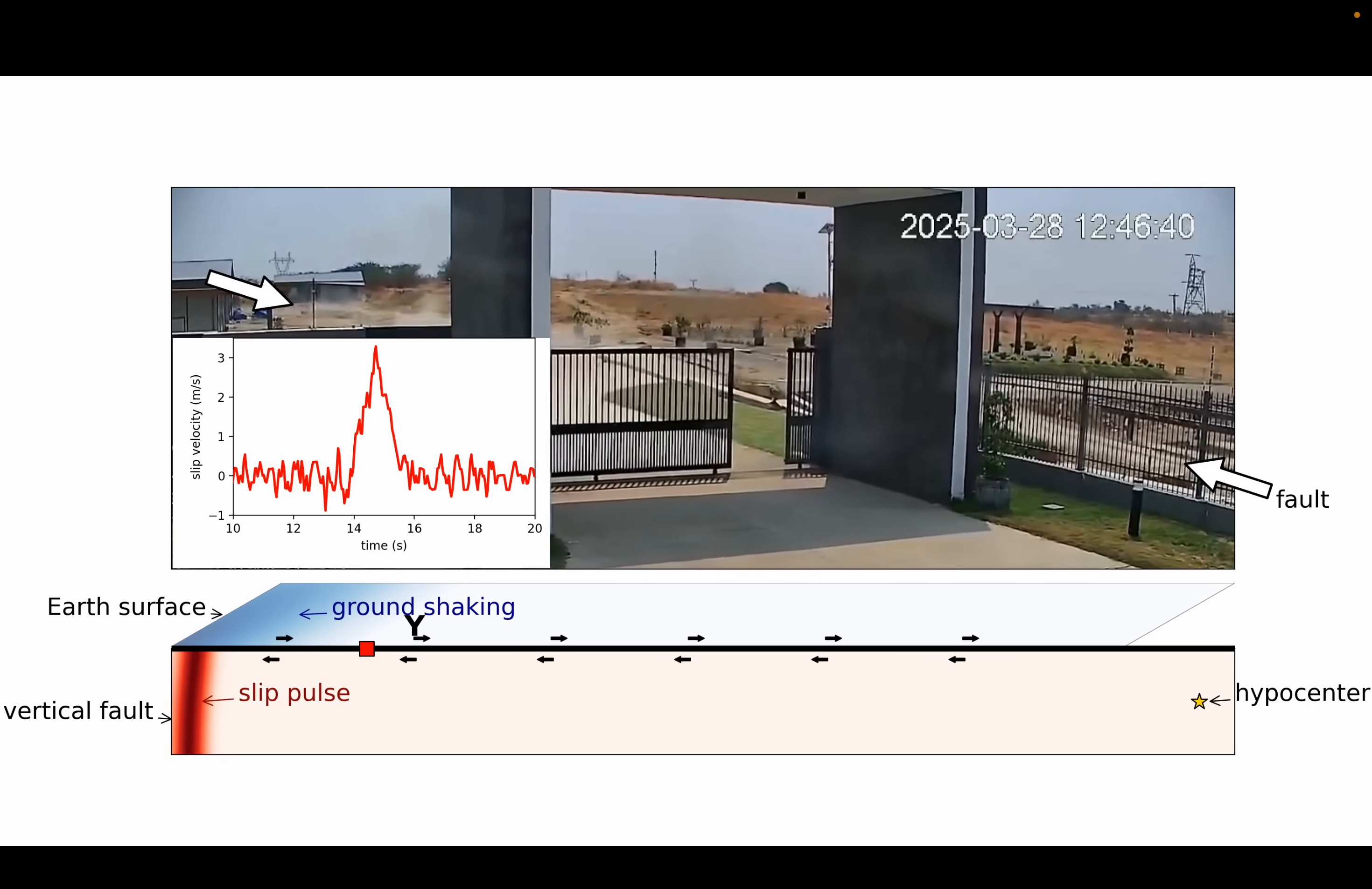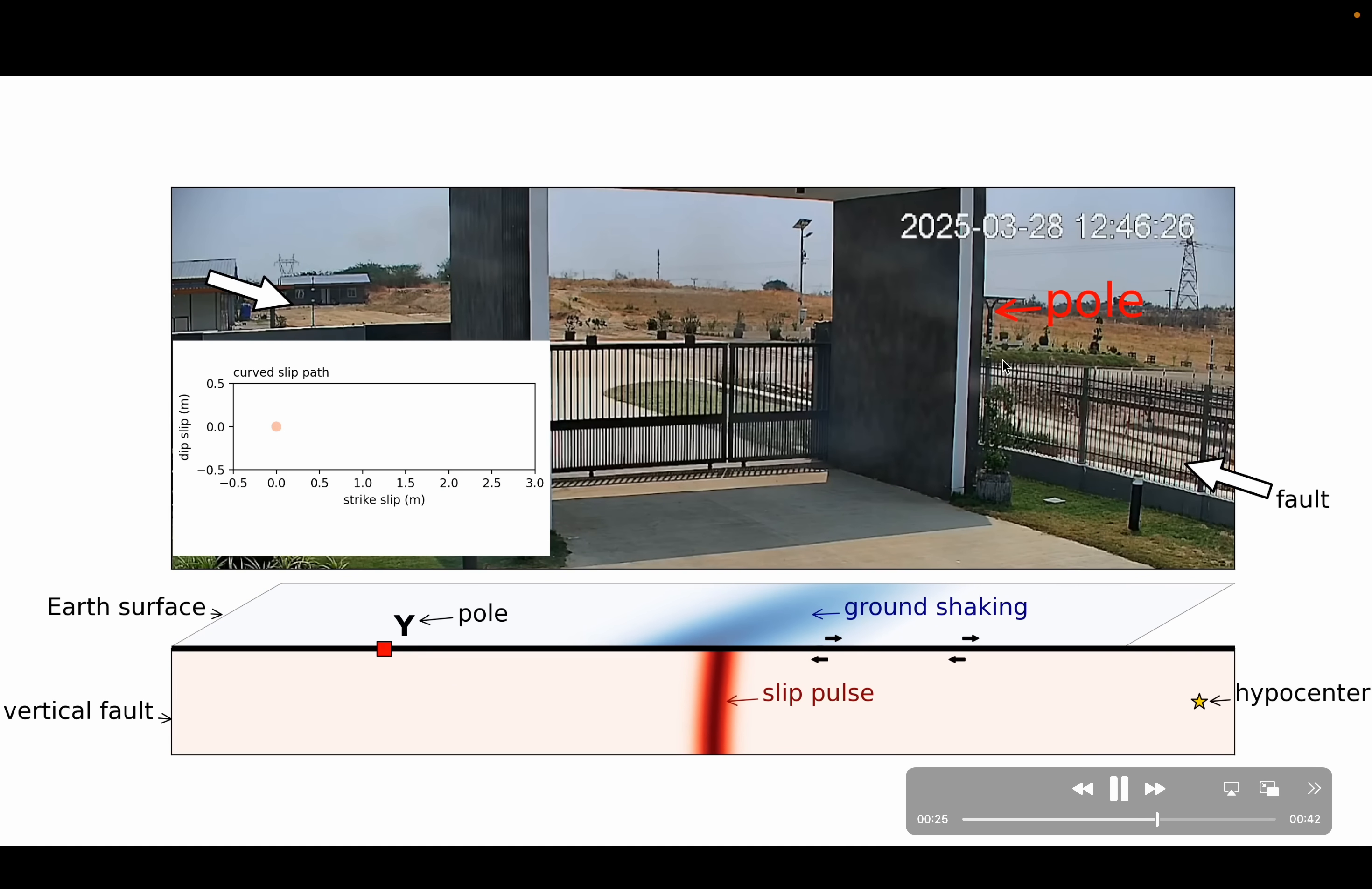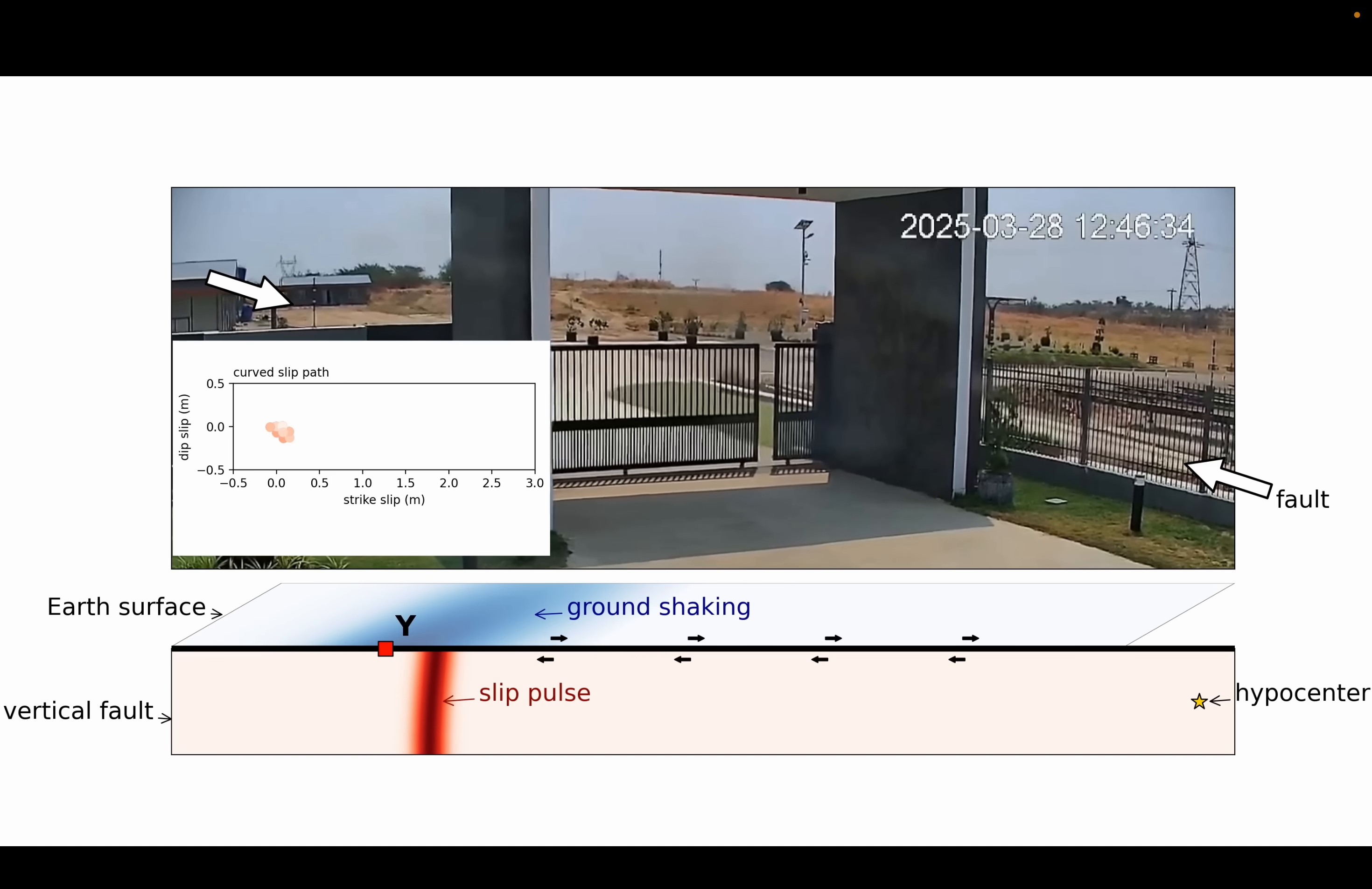Now this video is going to begin again, but this time I want to focus on the subtle curvature that the fault moves along and this pole will show you that curvature. So as before, the ground begins to shake and then,